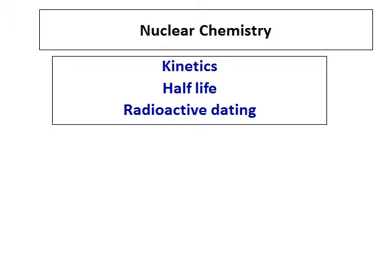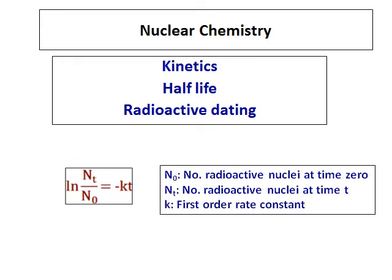Some of the equations which you will be using is ln(Nt/N0) equals minus kt, where Nt is the number of radioactive nuclei at time t and N0 is at time zero, and k is the rate constant.